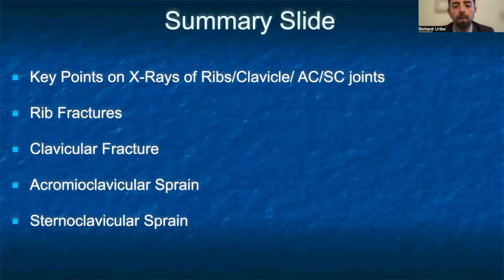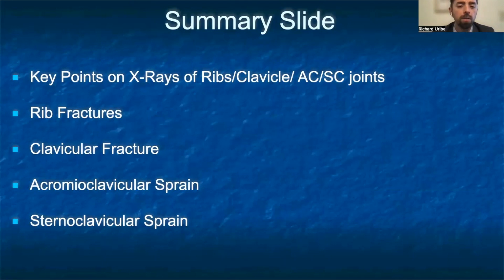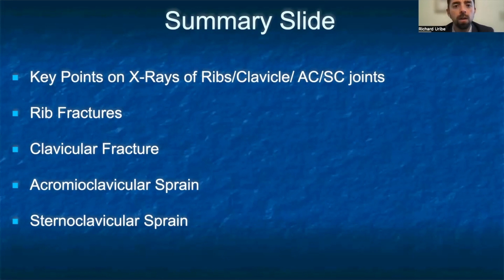In summary, common injuries of the ribs, clavicles, and AC and SC joints include fractures, sprains, and dislocations. X-ray is a first-line tool in assessing hemodynamically stable patients. For rib fractures, you can use a PA view or a 45-degree oblique view of the chest. Clavicular fractures and AC and SC joint sprains may also be diagnosed with a simple PA view of the chest, but may require a focused Zanca view for AC joint sprains or a focused serendipity view for SC joint sprains. If there is any concern for secondary intrathoracic or intra-abdominal injury, ultrasound and CT scan are valuable tools in evaluation and in determining management.